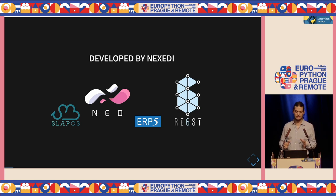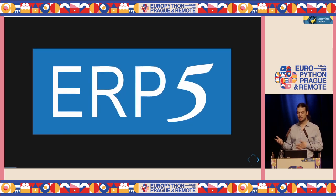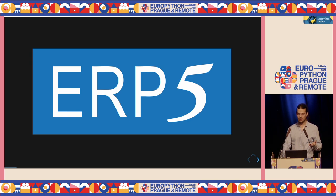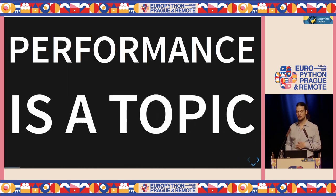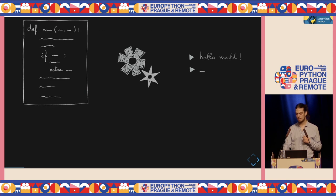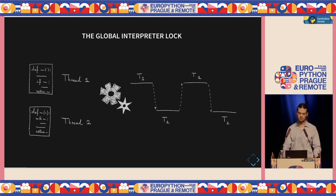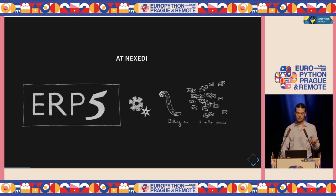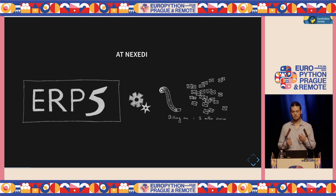The reason I mention these is because they're all written in Python. ERP5 in particular is over 20 years old, and this is to say Python is part of Nexedy's DNA, which is why I'm going to talk to you about performance. Whenever there's a talk about performance, two facts come up: Python is interpreted, and the interpreter has a global interpreter lock.